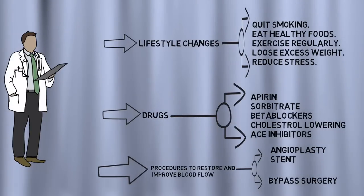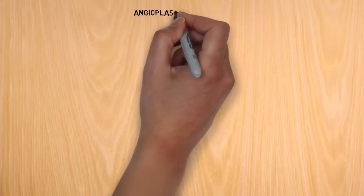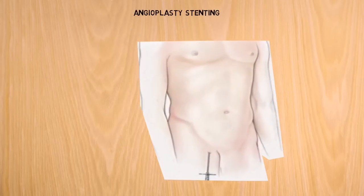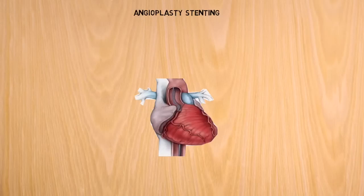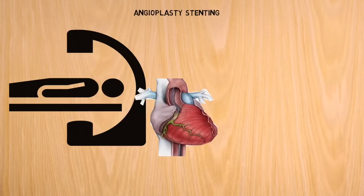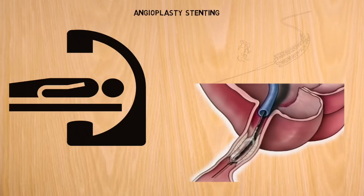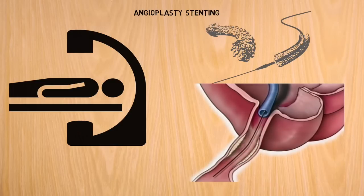Angioplasty and stenting is done under local anesthesia in the cath lab. A needle is used to access the femoral artery in the groin and a guide wire is passed to reach the heart. A guiding catheter is then passed on this wire to reach the coronary artery. The wire is then passed across the blocked artery, which is subsequently dilated with a balloon and a stent is deployed.